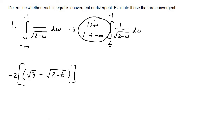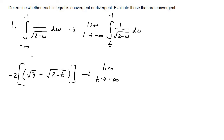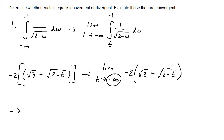Don't forget we set up limit notation, so we rewrite: the limit as t approaches negative infinity of negative two times the square root of three minus the square root of two minus t. Using direct substitution, we plug in negative infinity for t: two minus negative infinity equals two plus infinity.